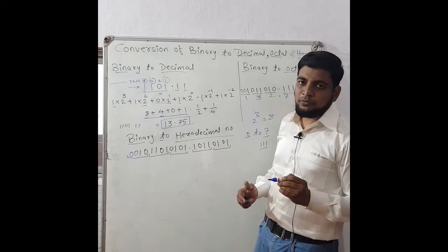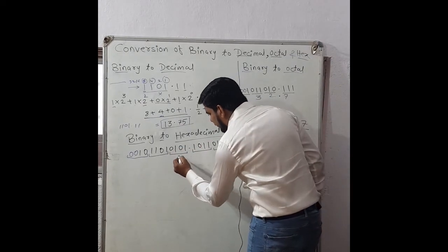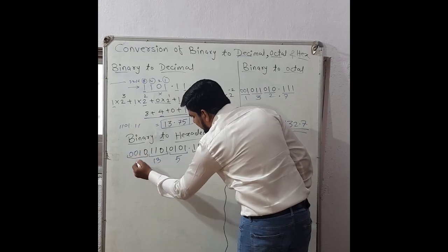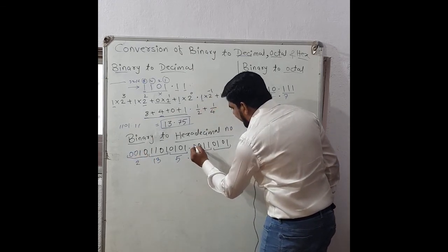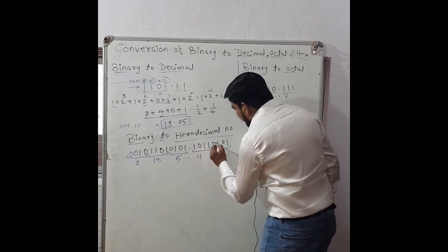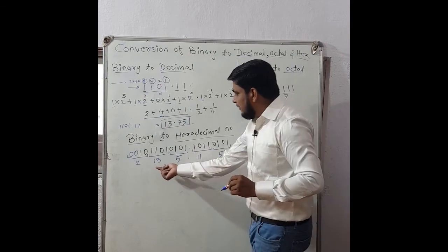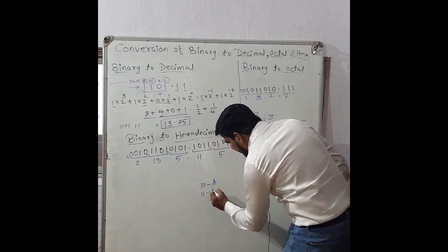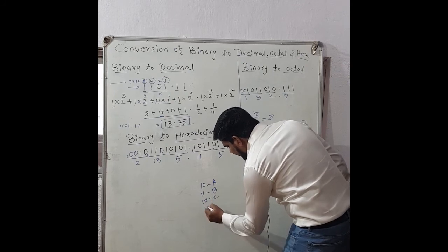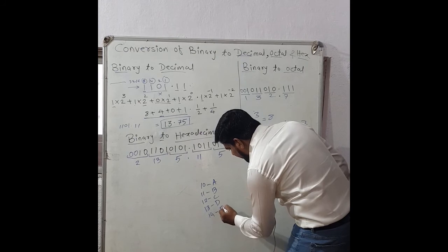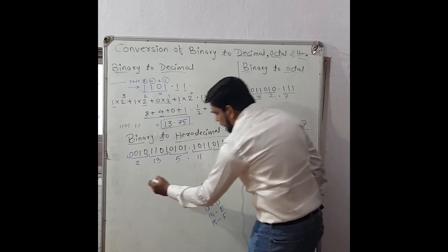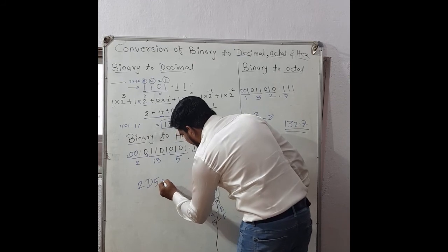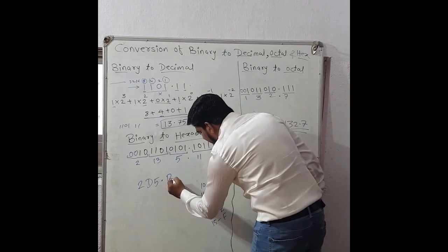Now write the decimal equivalent of each group of four bits: 0101 is 5, 1101 is 13, 0010 is 2, and 1001 is 11 for the fractional part, and 0101 is 5. Since 13 has no direct representation in hexadecimal, we convert: 10 is A, 11 is B, 12 is C, 13 is D, 14 is E, 15 is F. So the result is 2 D 5 point B 5.